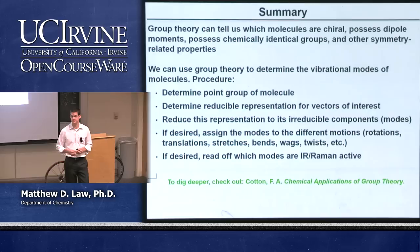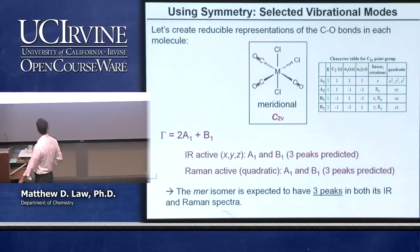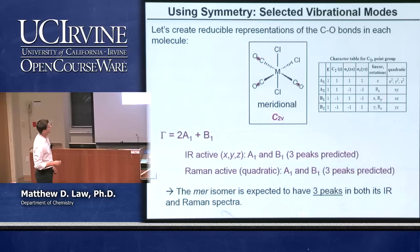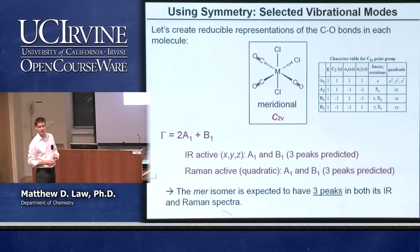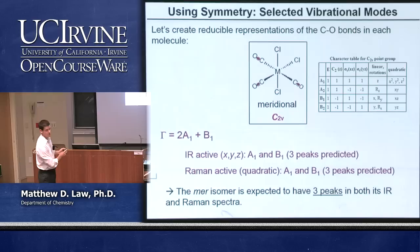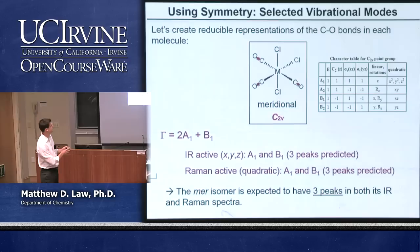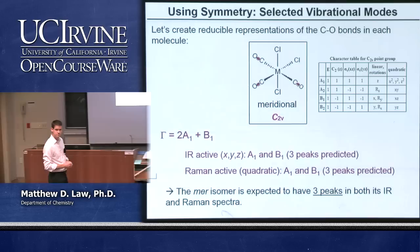A student asks: why was B2 not IR active? The instructor answers: B2 is going to be IR active, but B2 is not one of the irreducible representations we care about because it's not contained in our reducible representation. If you look at B2 in the character table, it has infrared activity because it goes as the Y-axis. The only mode not infrared active is A2, but we have neither A2 nor B2 in our irreducible set. All of the modes present are also Raman active.